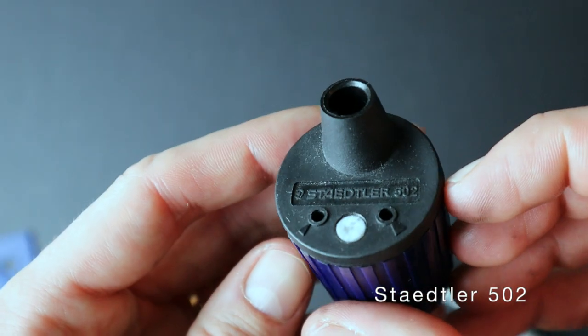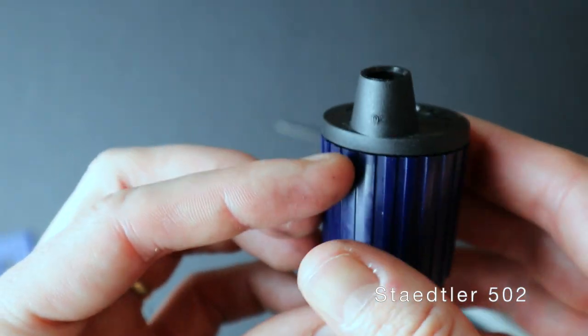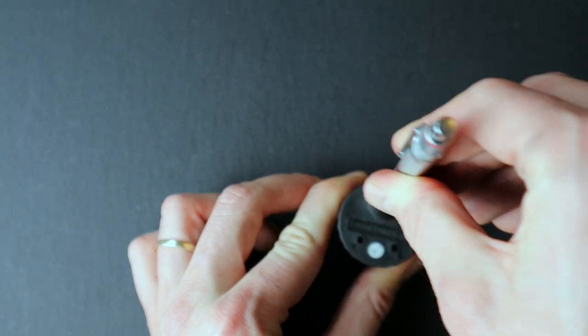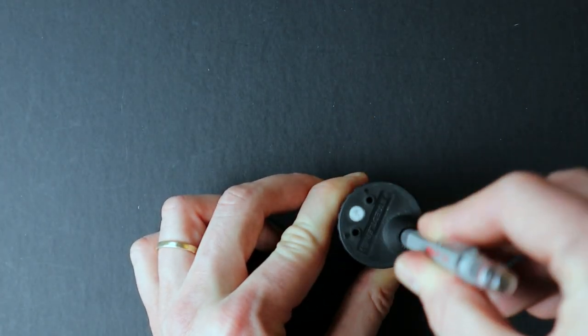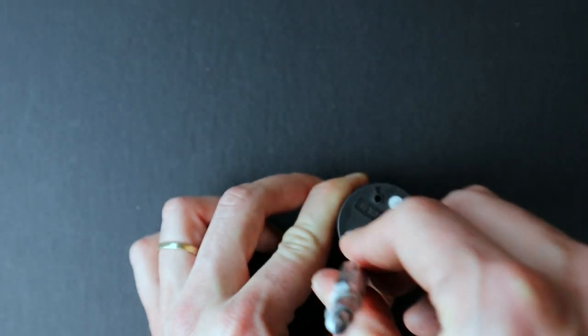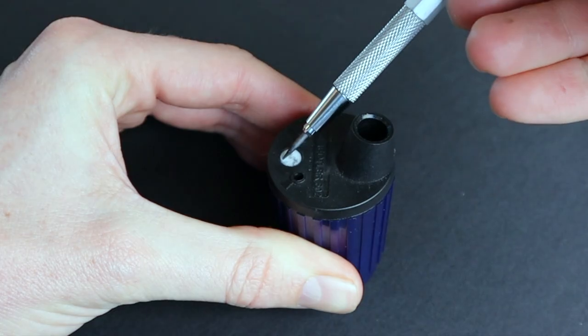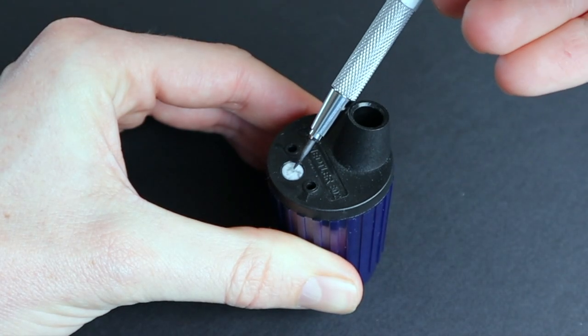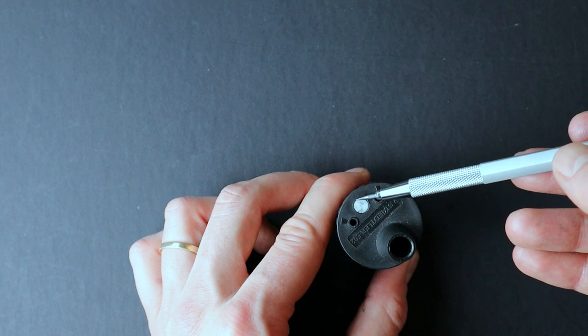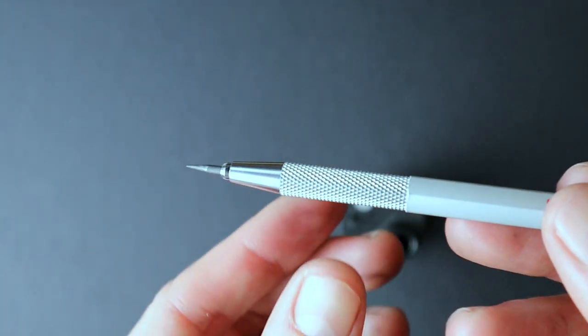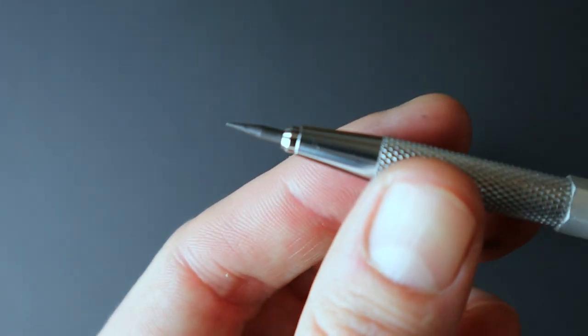When I need to sharpen the Rotaring, I use this lead pointer tub from Staedtler. Sharpening is as simple as putting the lead in and rotating it. It also has a foam insert for cleaning dust from the lead tip. There's something strangely satisfying about how sharp these leads can get when using this.